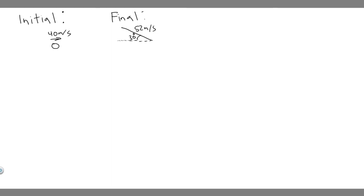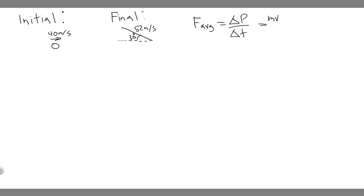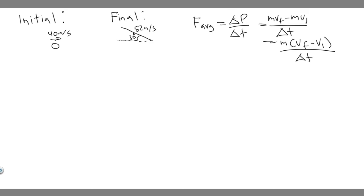To solve this problem, you need to know that average force equals the change in momentum over the change in time. The time is how long they're connected. Momentum is just mv, so the change in momentum is m times v-final minus m times v-initial. Factor out m to get: F_avg = m(v_final − v_initial) / Δt.